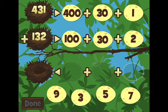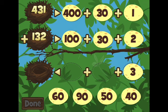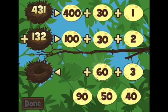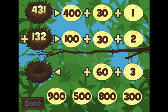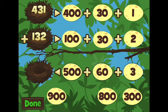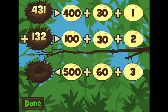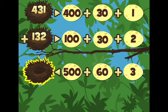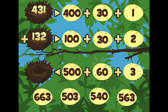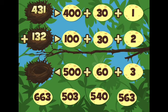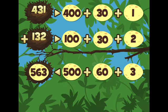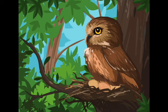Put them in the ones column. Very good. Put them in the tens column. Very good. Put them in the hundreds column. Done button, good opportunity for you. Put them in the $500, $60, and $3 one. $500 plus $60 plus $3 makes $563, exactly correct.